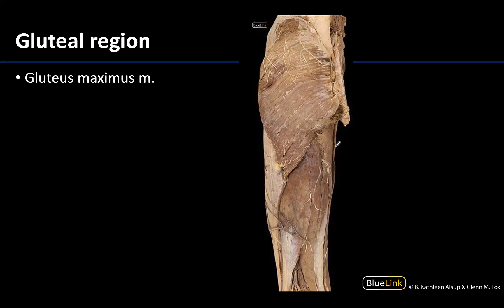There are going to be three glutes and they will go from superficial to deep and from largest to smallest. Starting with the gluteus maximus, which I'm going to outline right here — and you'll notice I didn't include this muscle up here, which is actually a little bit of the gluteus medius. You can see just a little bit superior to the gluteus maximus is the gluteus medius; otherwise the gluteus maximus completely occludes or covers up the gluteus medius and certainly the gluteus minimus.